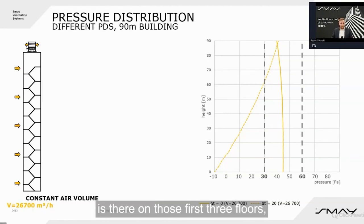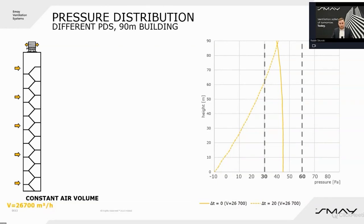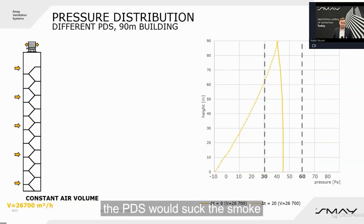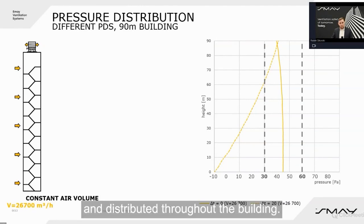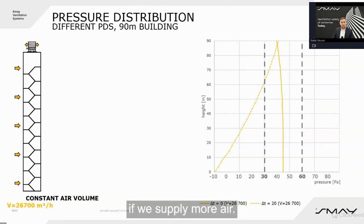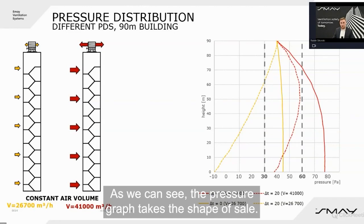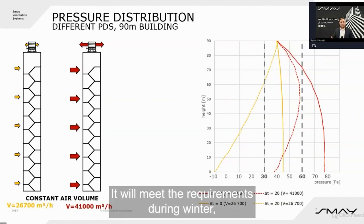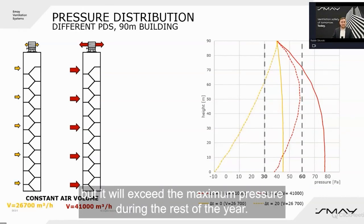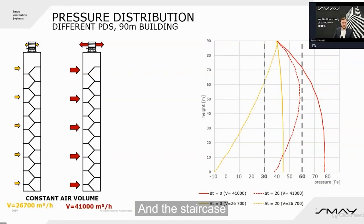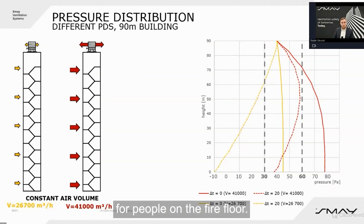But during winter, shown as a dashed line, we have underpressure on the first three floors. If a fire occurs on those first three floors, the PDS would suck in smoke and distribute it throughout the building. If we supply more air, the pressure graph takes the shape of a sail — it will meet requirements in winter, but will exceed the maximum pressure during the rest of the year, making the staircase a trap for people on the fire floor.